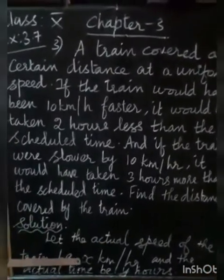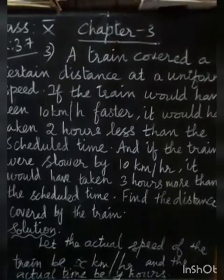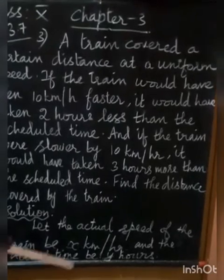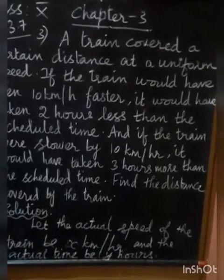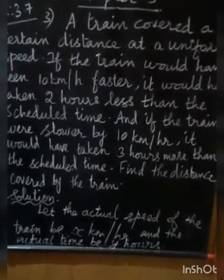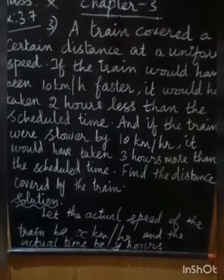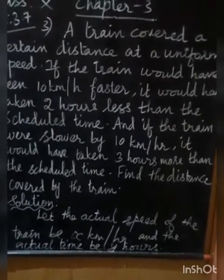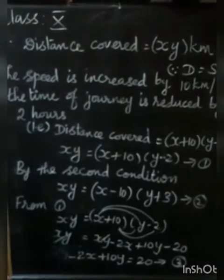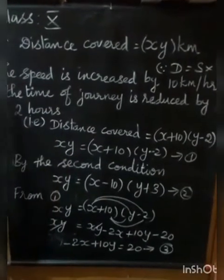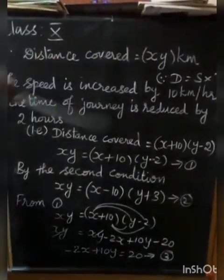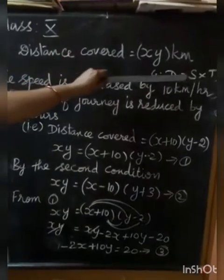The actual speed of the train is X km per hour and the actual time is Y hours. Distance covered is equal to X into Y km. Distance is equal to speed into time.